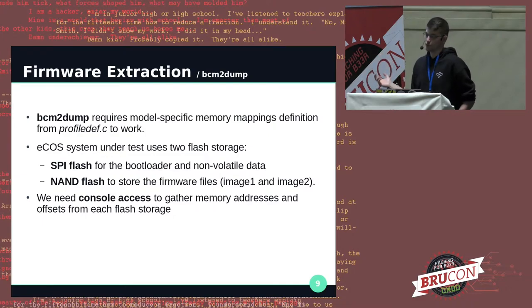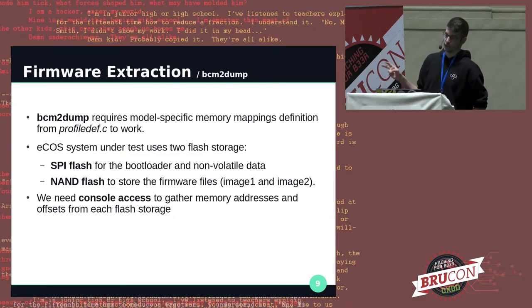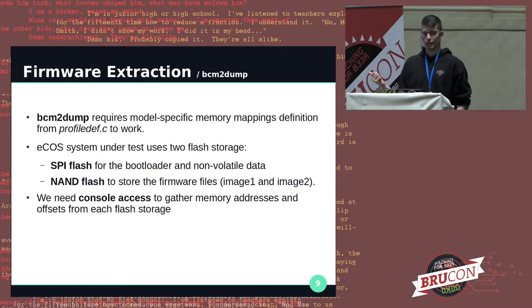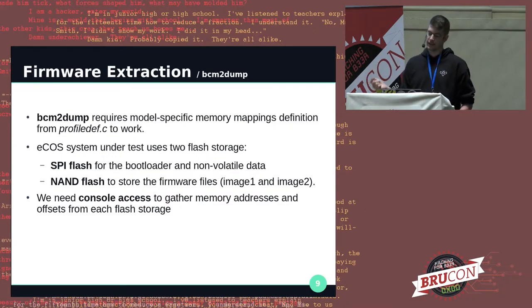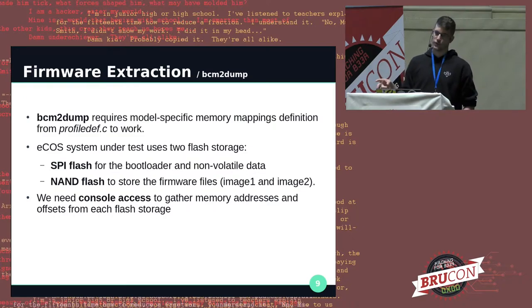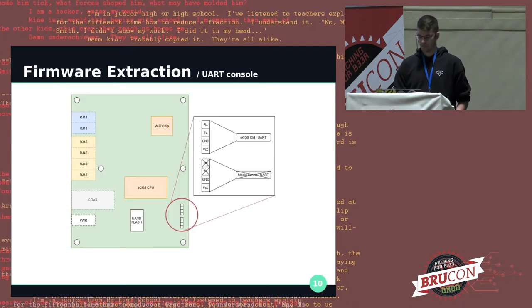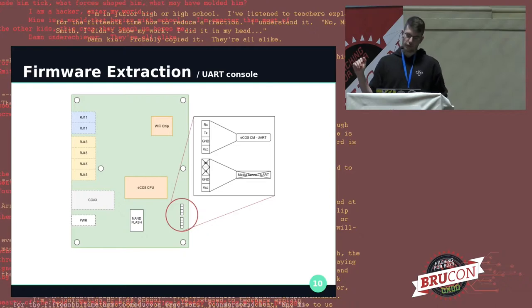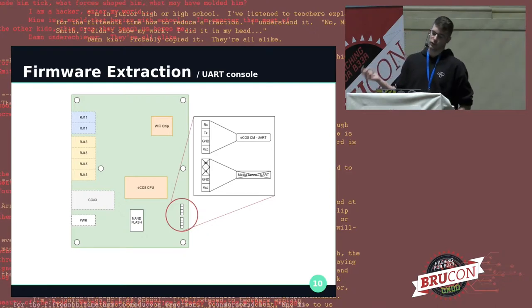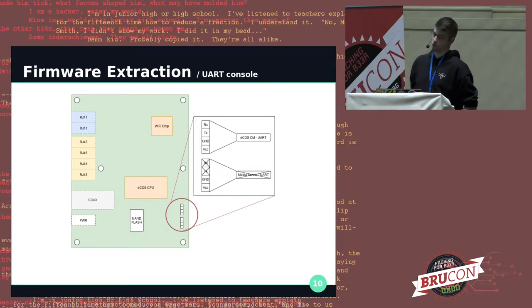Broadcom cable modems always use two flash storage chips: an SPI flash for bootloaders and non-volatile data, and a NAND flash to store the firmware files. You have two images — image 1 and image 2, with image 2 acting as a backup if image 1 gets corrupted. To get a shell, you have two ways: either connect over Telnet if it's exposed (usually it's not), or connect over UART.